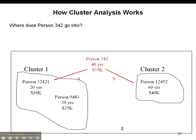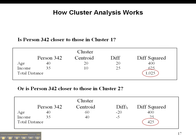Then it continues on. We've got another guy who's 40 years old, 35,000 income. Again, we compare to the initial cluster. Again, looking at the sum of the squared differences. 20 squared 400, 25 squared 625, total distance 1025. Again, 20 squared 400, 5 squared 25, 425. This time this guy is closest to cluster 2.